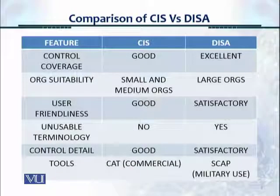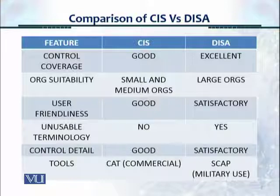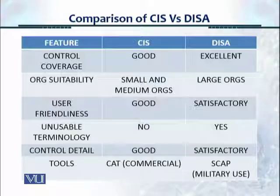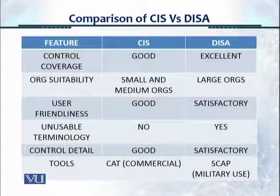In this slide, we see a comparison table between CIS and DISA. The first feature is control coverage, which talks about the extent or the number of controls and how much IT infrastructure each covers. CIS covers about 107 total benchmarks, and DISA covers about 425. So DISA has much more coverage and is the winner here.